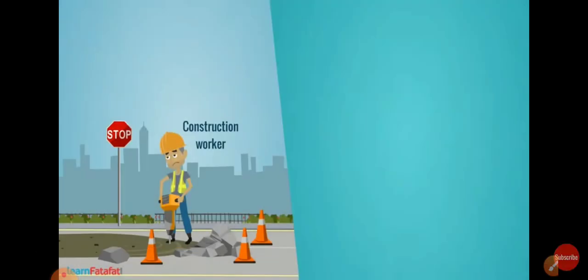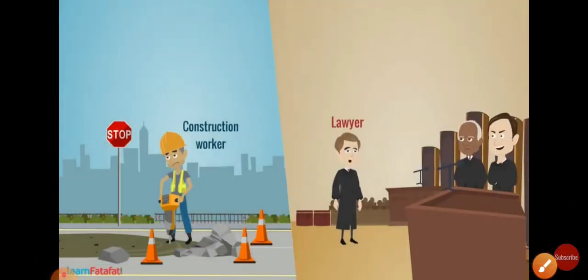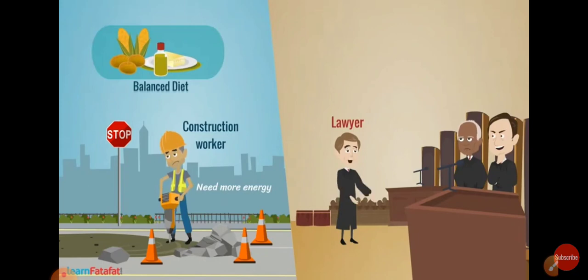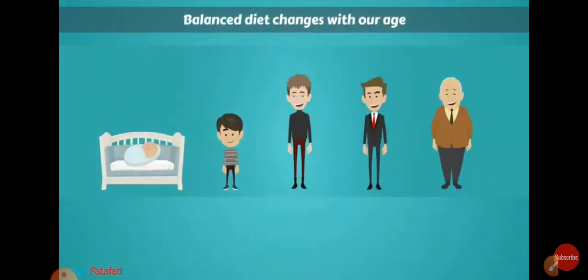Different people do different types of jobs, so they require different types of balanced diet for their daily meal. For example, a construction worker has to do heavy work, so a greater amount of protein and carbohydrates should be included in his meal. A lawyer, on the other hand, will not need as much food as compared to a construction worker. A lawyer can maintain his balanced diet with a little amount of protein and a moderate amount of carbohydrates.